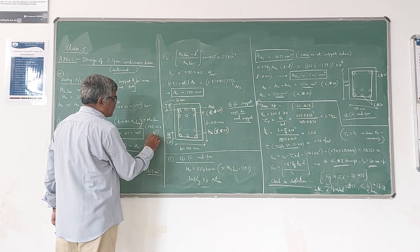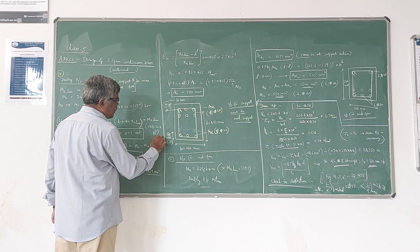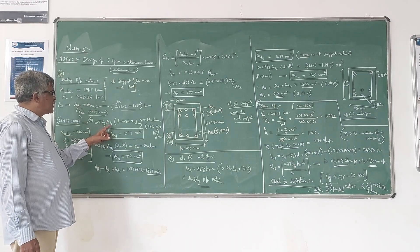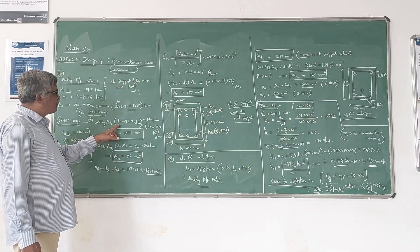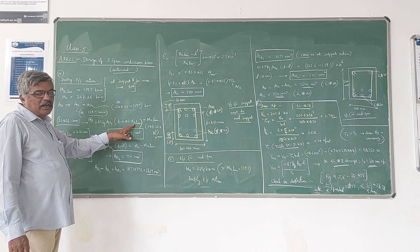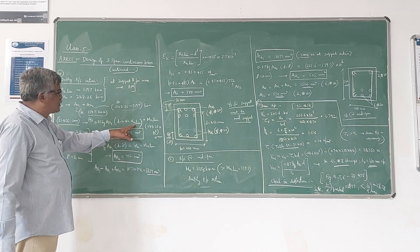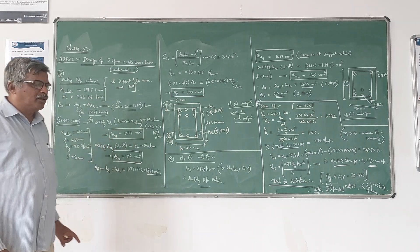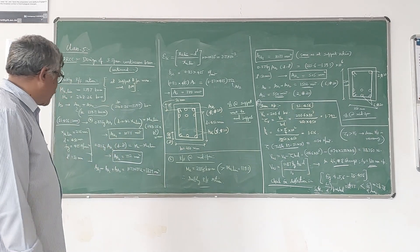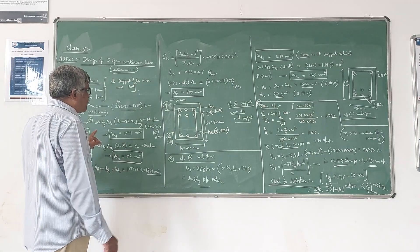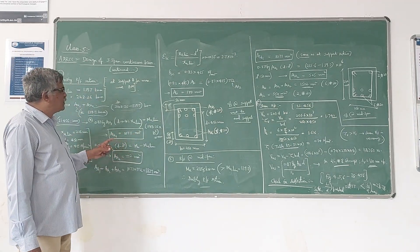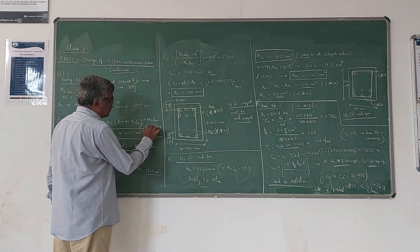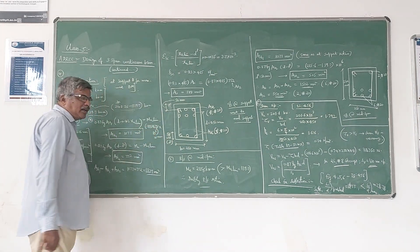So it will be converted to Newton-millimeter. Substituting the known values — Fy is 415, AST1 is unknown, d is 450, and the effective depth obtained from the last video is 450 mm. After substituting and simplifying, AST1 comes out to be 1077 mm². That is the steel required to take care of 138.7 kNm.